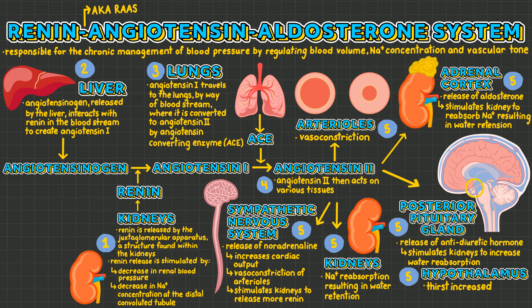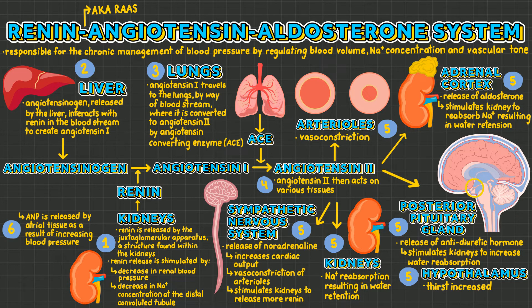As a result of this cascade of events, blood pressure increases. Atrial tissue senses this increase in blood pressure and releases atrial natriuretic peptide, which inhibits further release of renin, stopping the cascade.